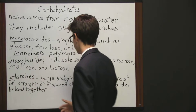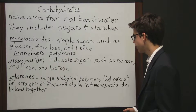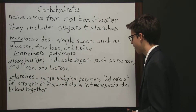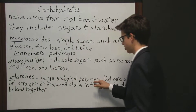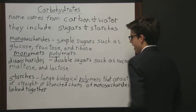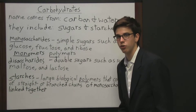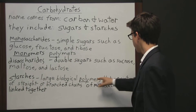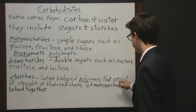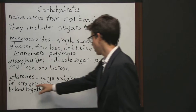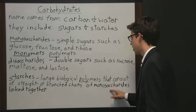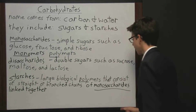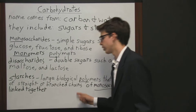The third type of carbohydrate is starches, which are large biological polymers that consist of straight or branched chains of monosaccharides linked together. These are large biological polymers — poly meaning more than one — where monomers join together to form polymers. So starches are basically made up of monosaccharides linked together either in straight or branched chains.